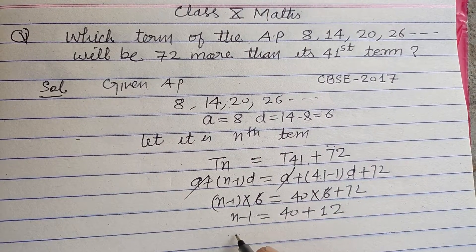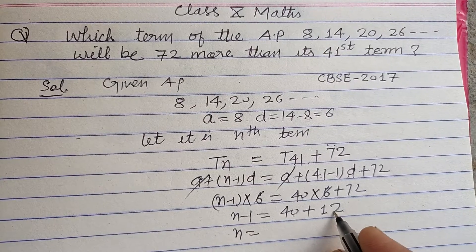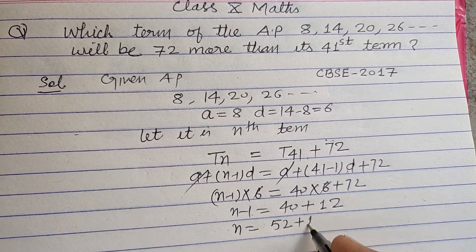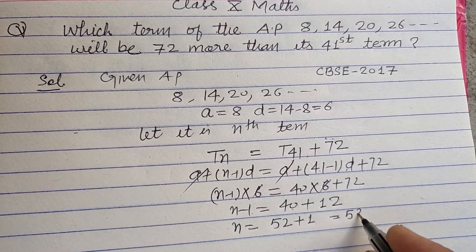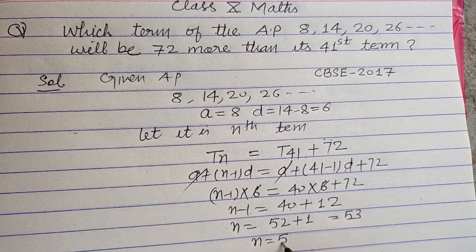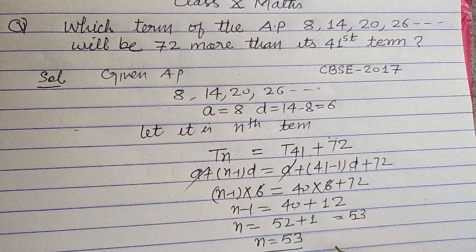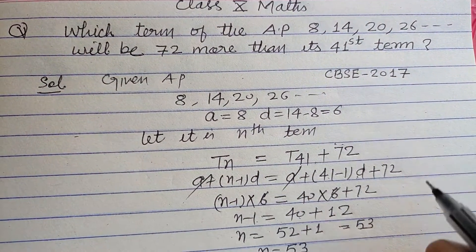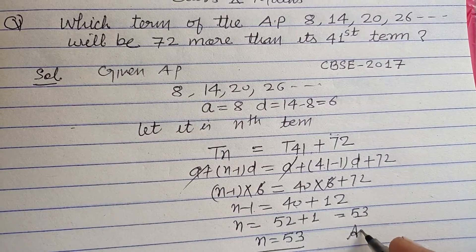Therefore n = 40 + 12 + 1, which equals 53. So n is 53. The 53rd term is 72 more than the 41st term, and this is our answer.